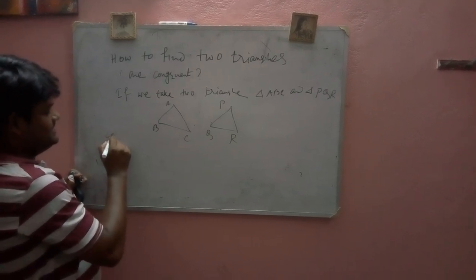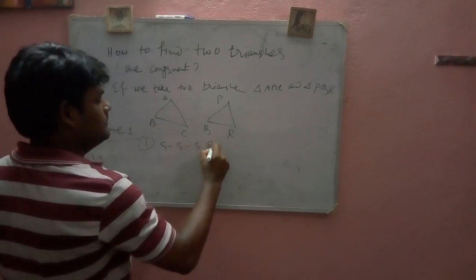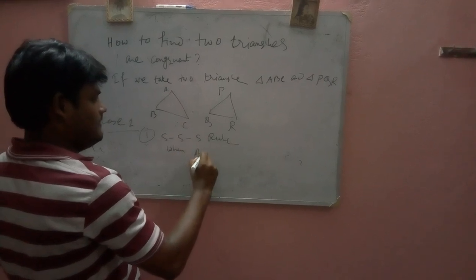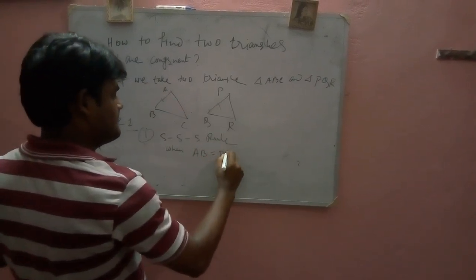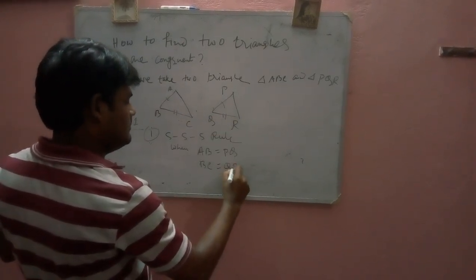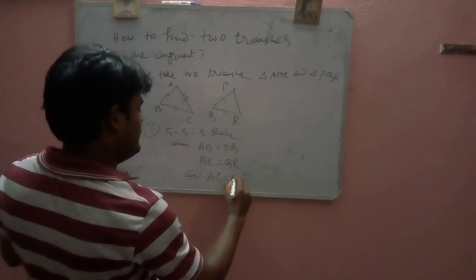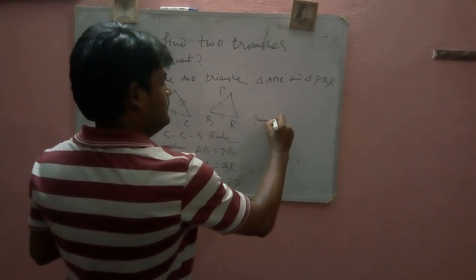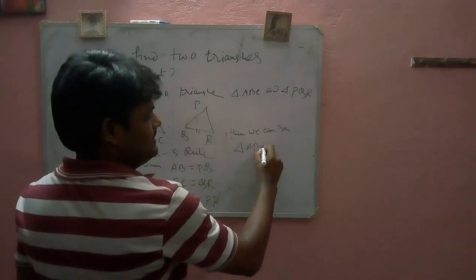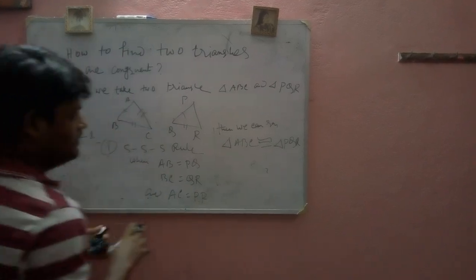First case, case one, that is Side-Side-Side rule. What is that? When AB is equal to PQ, BC is equal to QR, and AC is equal to PR, then we can say triangle ABC is congruent to triangle PQR.